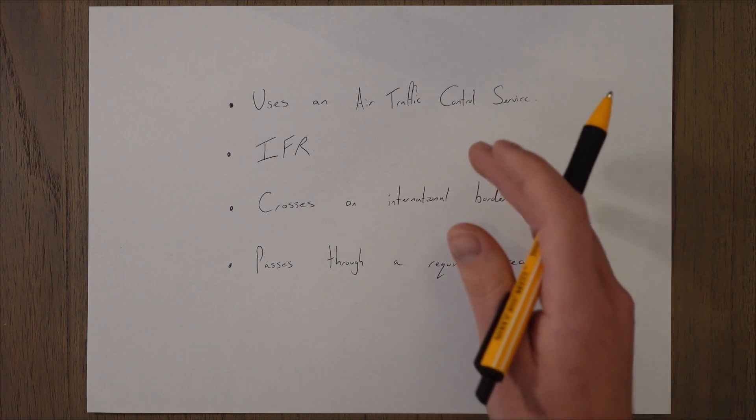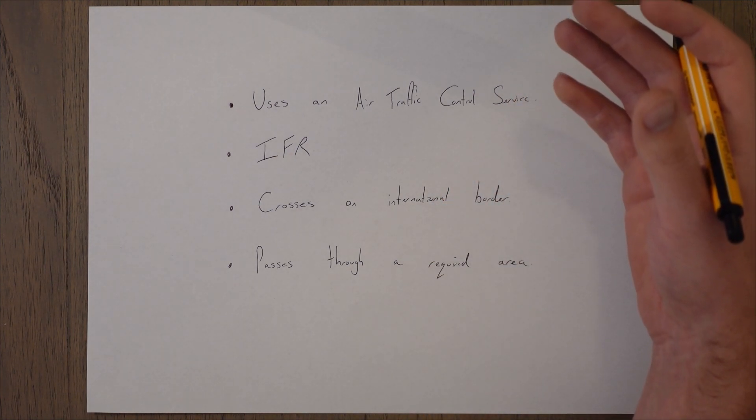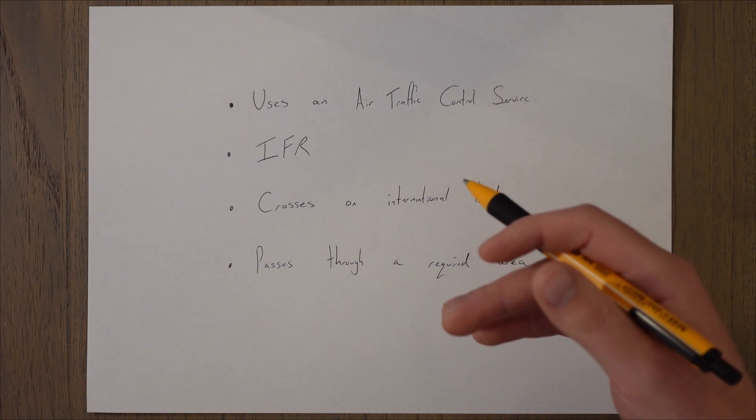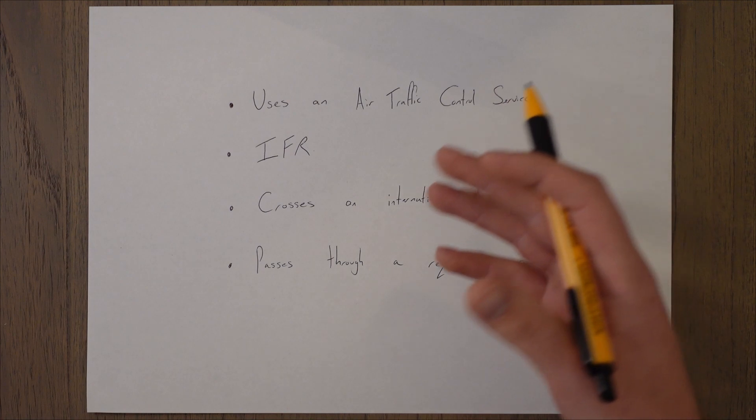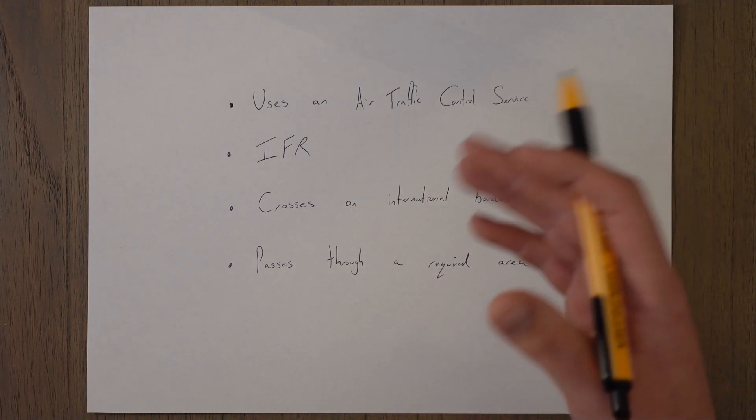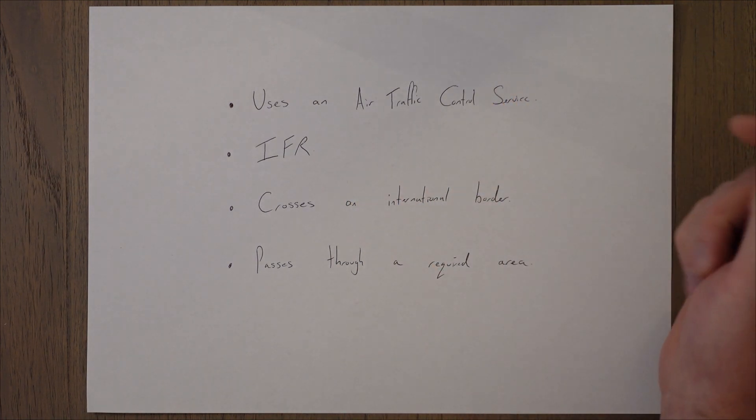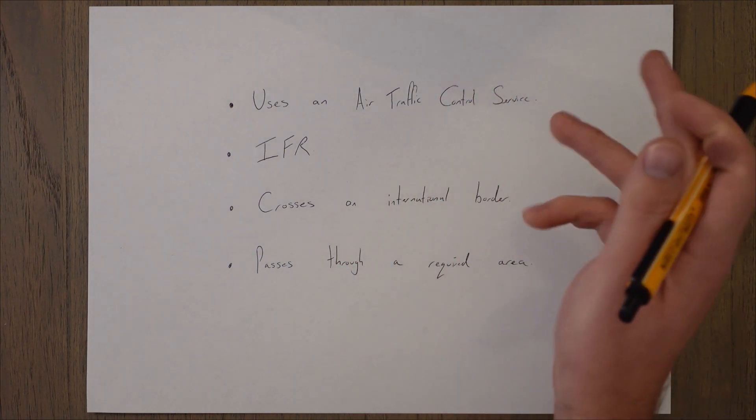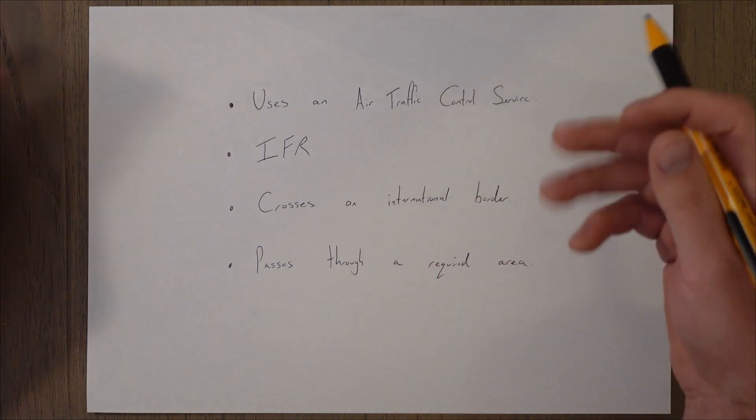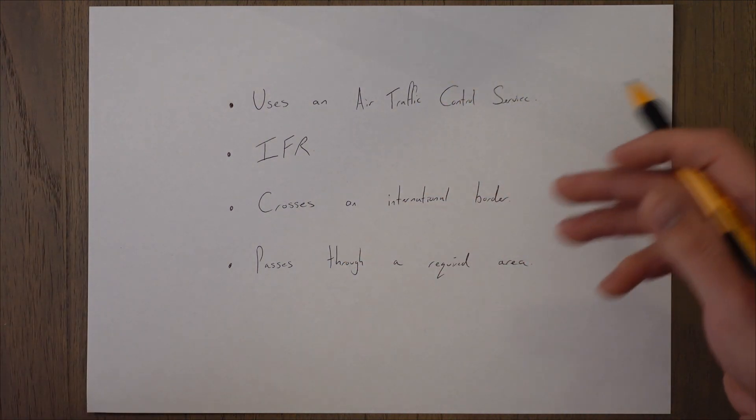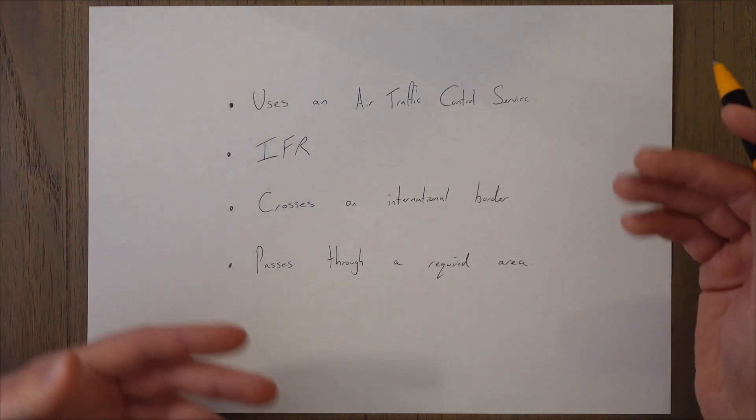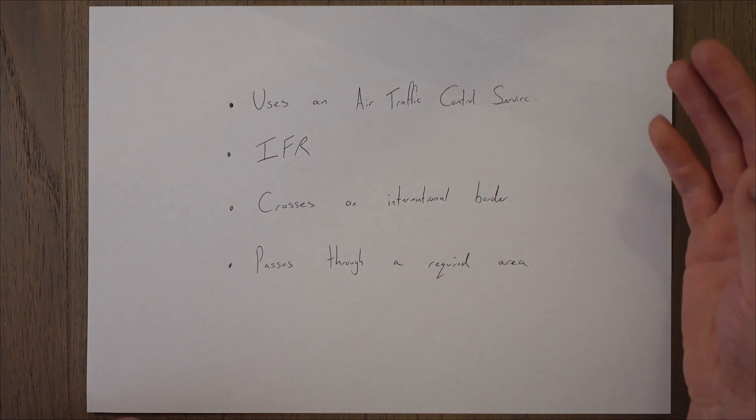If there are any delays then air traffic control can delay the estimated departure time so the flight plan is updated with the new information. But this must be done for IFR flights if you're more than 30 minutes late or 60 minutes for a VFR flight. So you've got a little bit of a window of when you need to take off before you need to delay the flight plan officially. Air traffic control basically deal with the problem for you but you have to be aware of delaying a flight plan if you are more than half an hour late for IFR flights or 60 minutes for VFR.